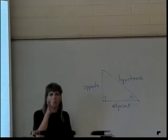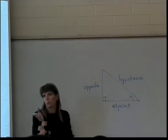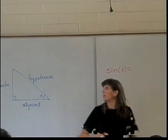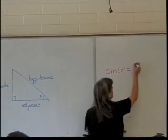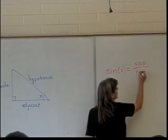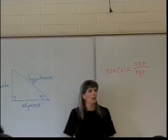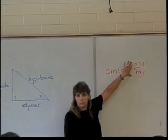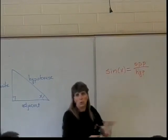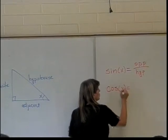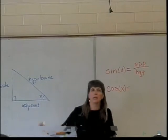Several of you have probably heard of SOHCAHTOA — you can remember it using the first letters, and I'll explain it for those who haven't heard it. Based on the names of the sides, we define the sine of X as the opposite side over the hypotenuse. And since your hypotenuse is always going to be the longest side of your right triangle, this will be a number less than one — your sine function is always going to be a number less than one. We define the cosine of X as the adjacent divided by the hypotenuse.